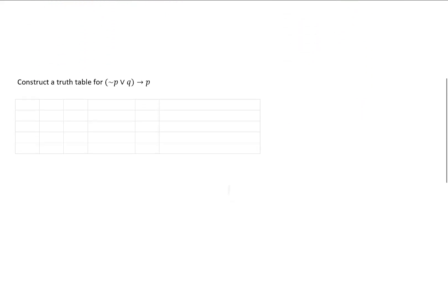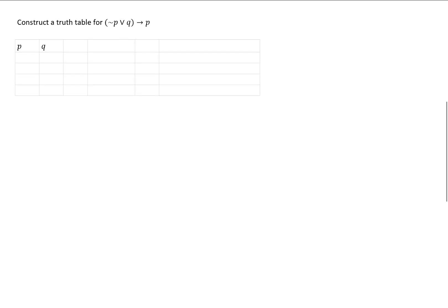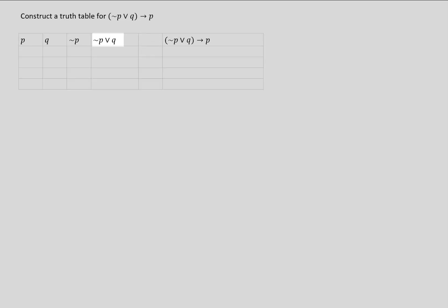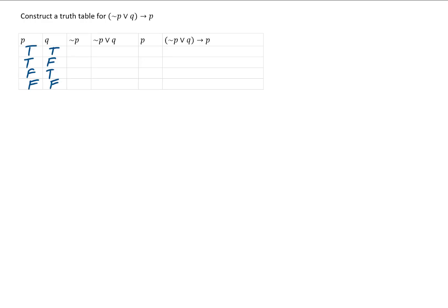For our next example, let's construct a truth table for this statement. We'll start with columns for P and Q, then use the first method to build up to the final statement. This statement has a not P in it, so we'll put not P in a column. Then not P or Q goes in the next column. And we'll also copy our P column down so we can more easily figure out the final column.